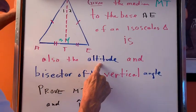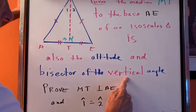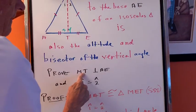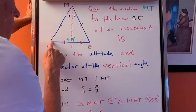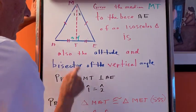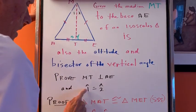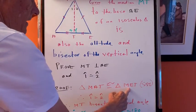It's also, we're trying to show that it's the altitude and bisector of the vertical angle. Okay, so we have to prove that MT is perpendicular to AE, and we're also going to prove that angle one is equal to angle two. Okay, proof: the two triangles MAT and MET are congruent by side-side-side.